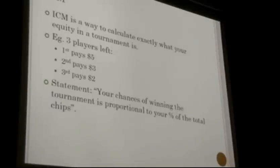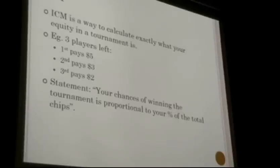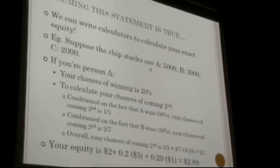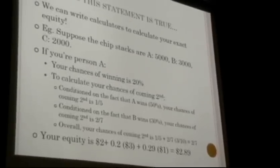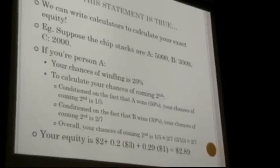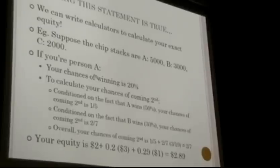Let's say there are three players left. First pays $5, second pays $3, and third pays $2. The statement of ICM — which is a very reasonable statement — is that your chances of winning the tournament are proportional to your percentage of the total chips. Suppose the chip stacks are: player A has 5,000 chips, player B has 3,000 chips, and player C has 2,000 chips. Then if you're player A, your chances of winning the tournament are 50%. If you're player C, your chances of winning are 20% by this model.